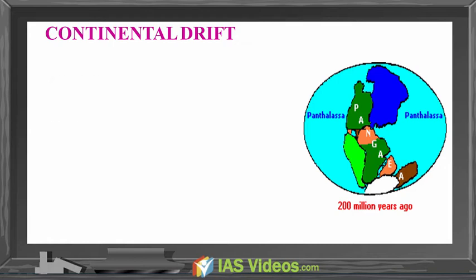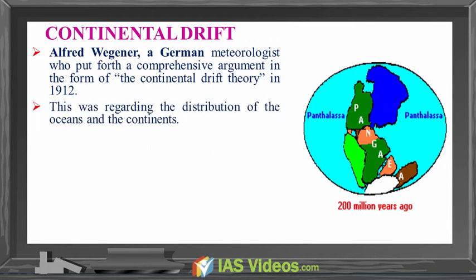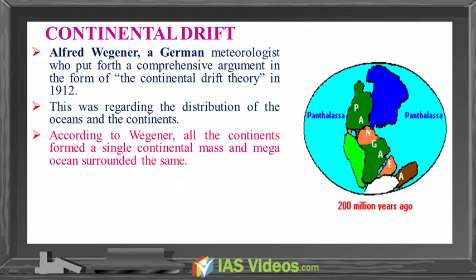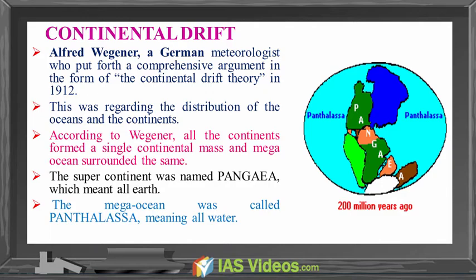Continental Drift. Alfred Wegener, a German meteorologist, put forth a comprehensive argument in the form of the Continental Drift Theory in 1912, regarding the distribution of the oceans and the continents. According to Wegener, all the continents formed a single continental mass and a mega-ocean surrounded the same. The super-continent was named Pangaea, which means 'all Earth,' and the mega-ocean was called Panthalassa, meaning 'all water.'